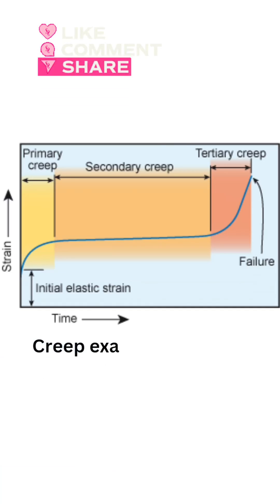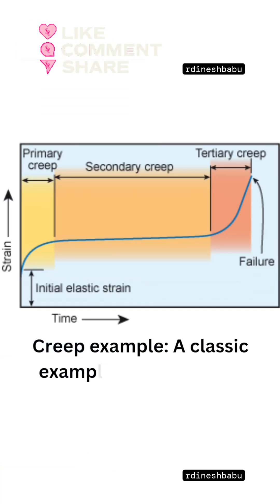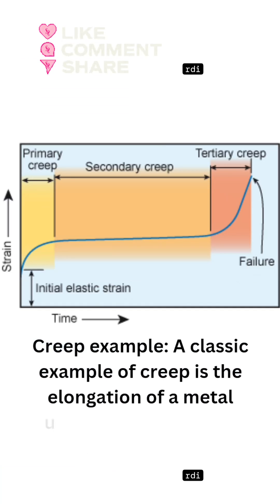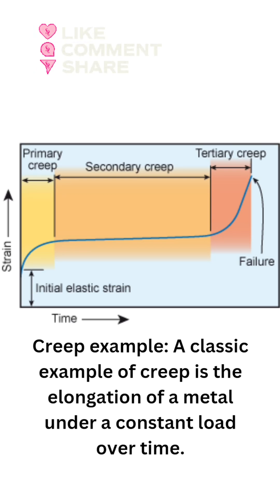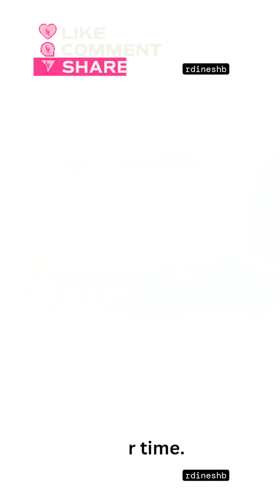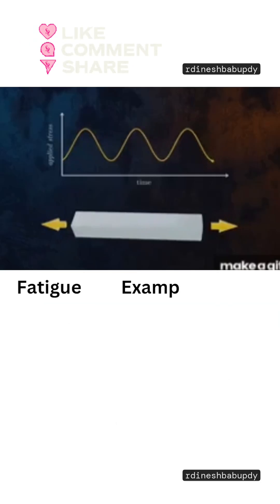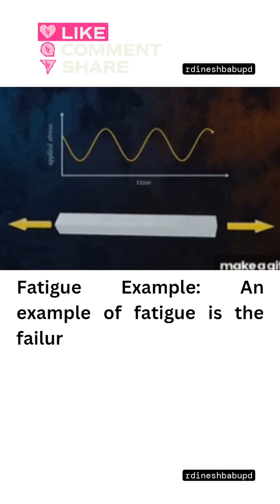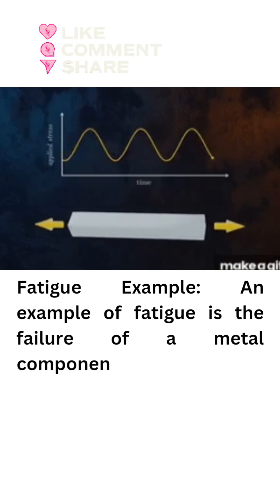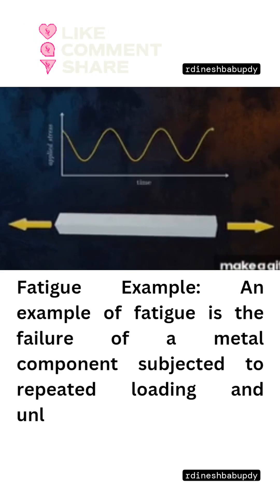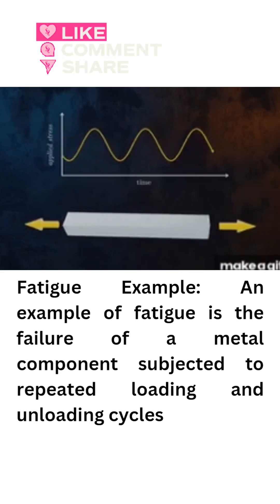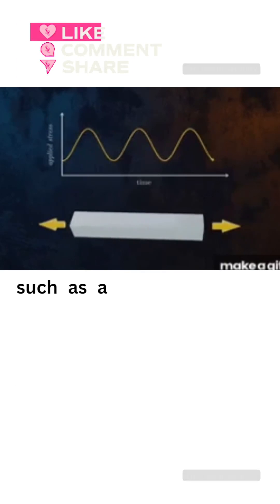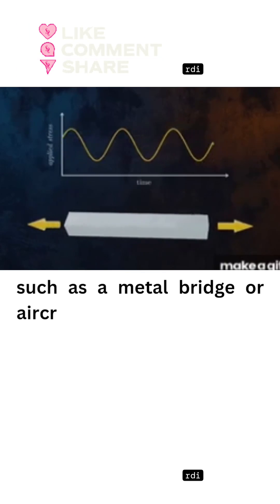Creep Example: A classic example of creep is the elongation of a metal under a constant load over time. Fatigue Example: An example of fatigue is the failure of a metal component subjected to repeated loading and unloading cycles, such as a metal bridge or aircraft component.